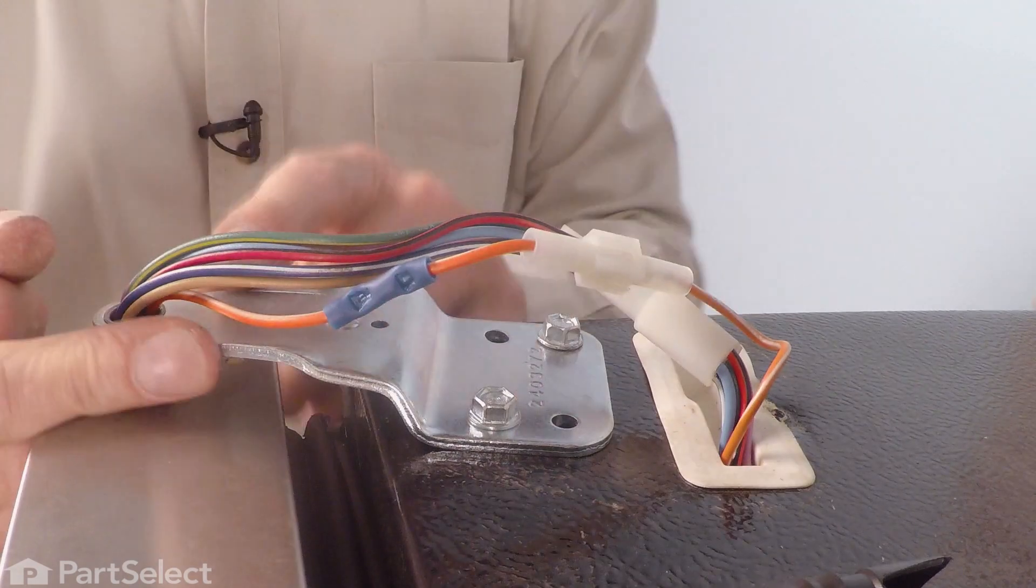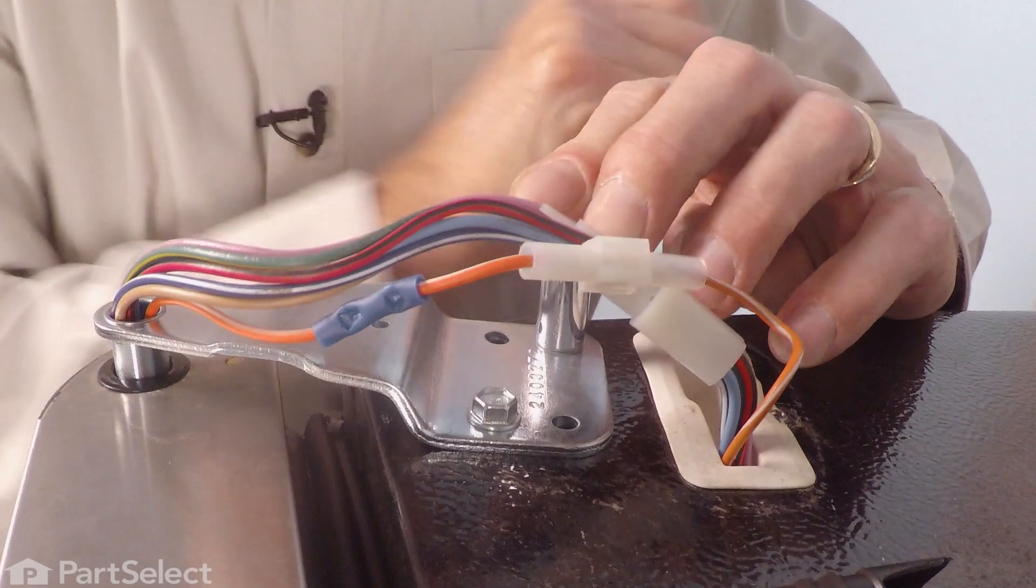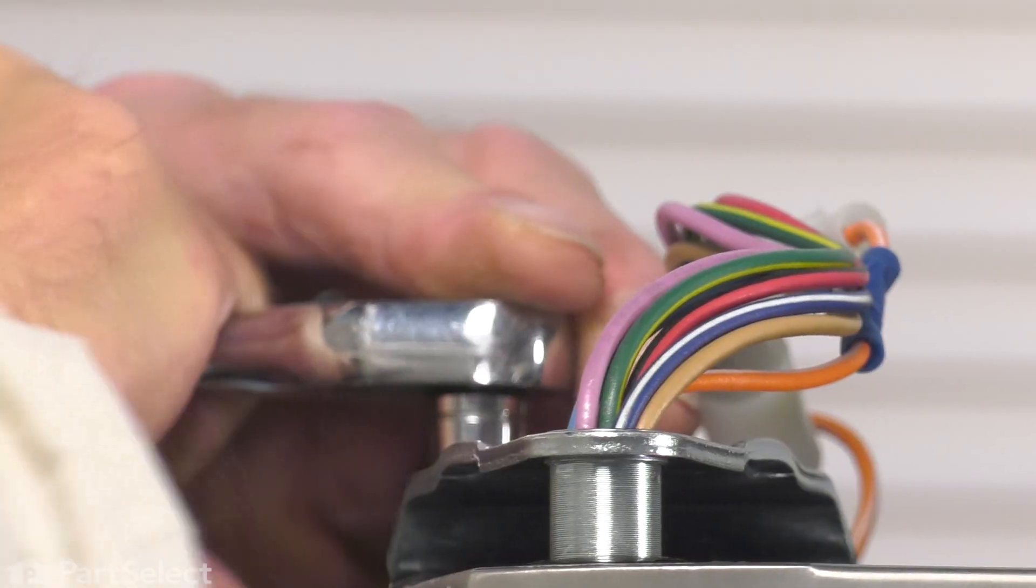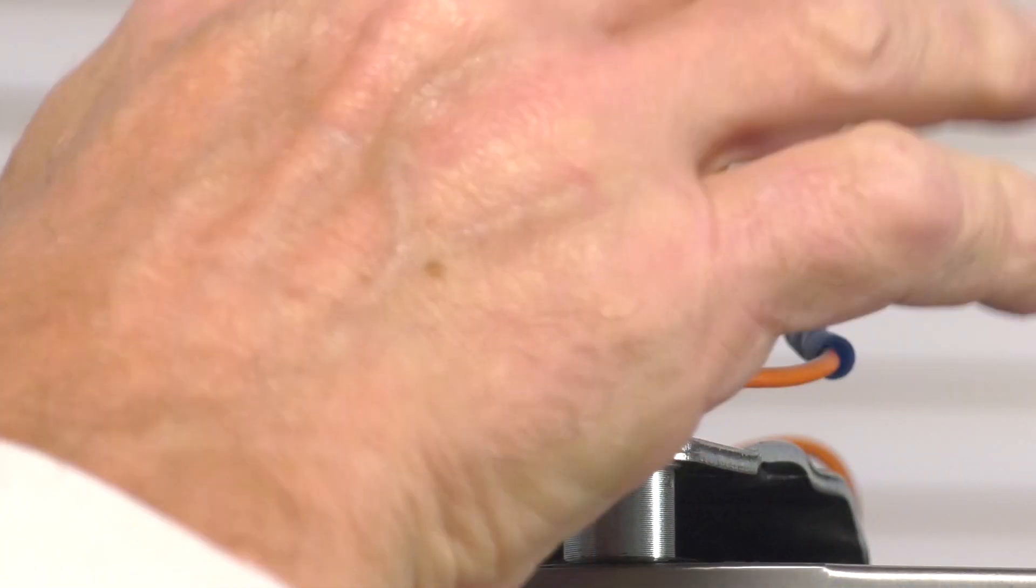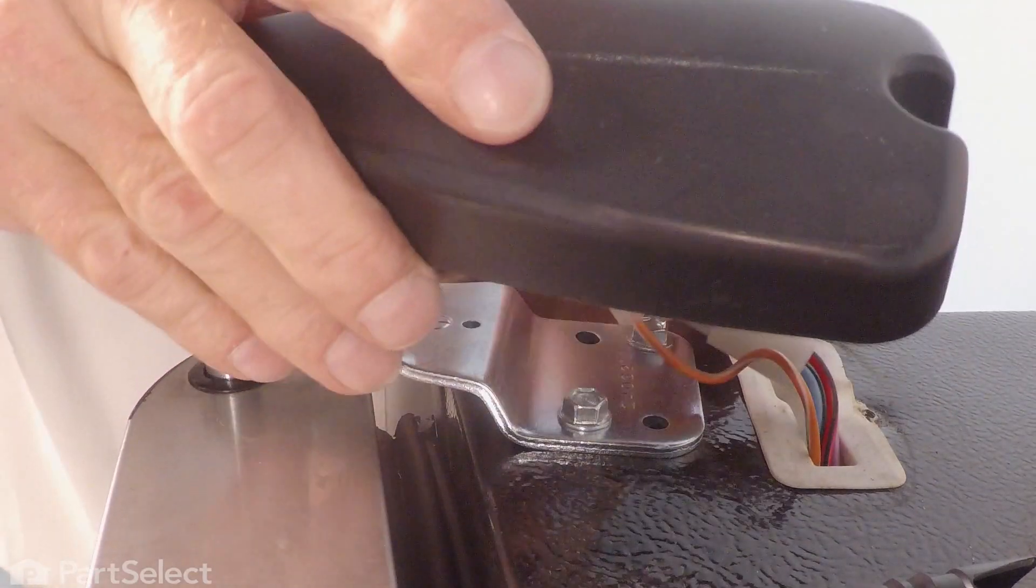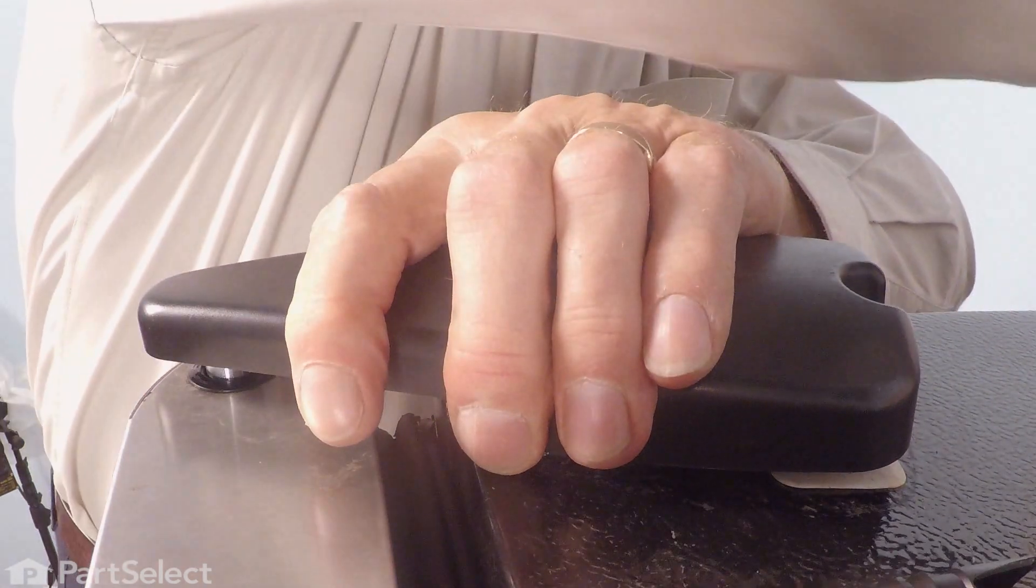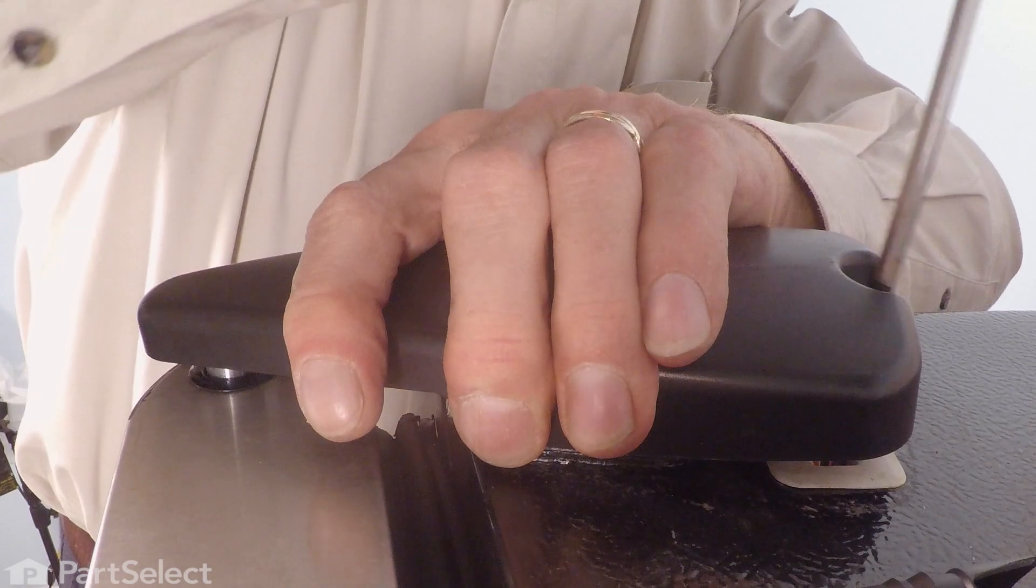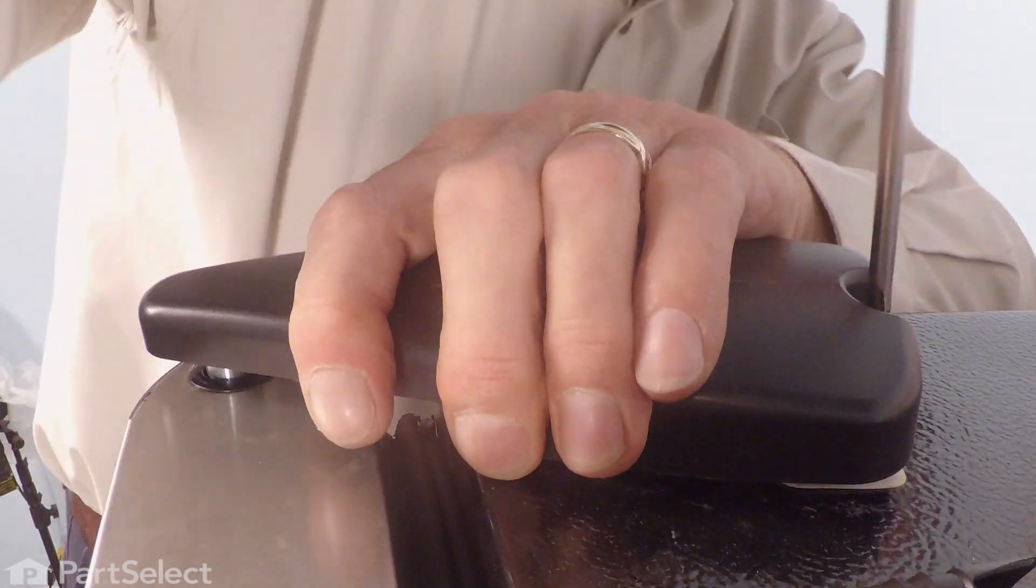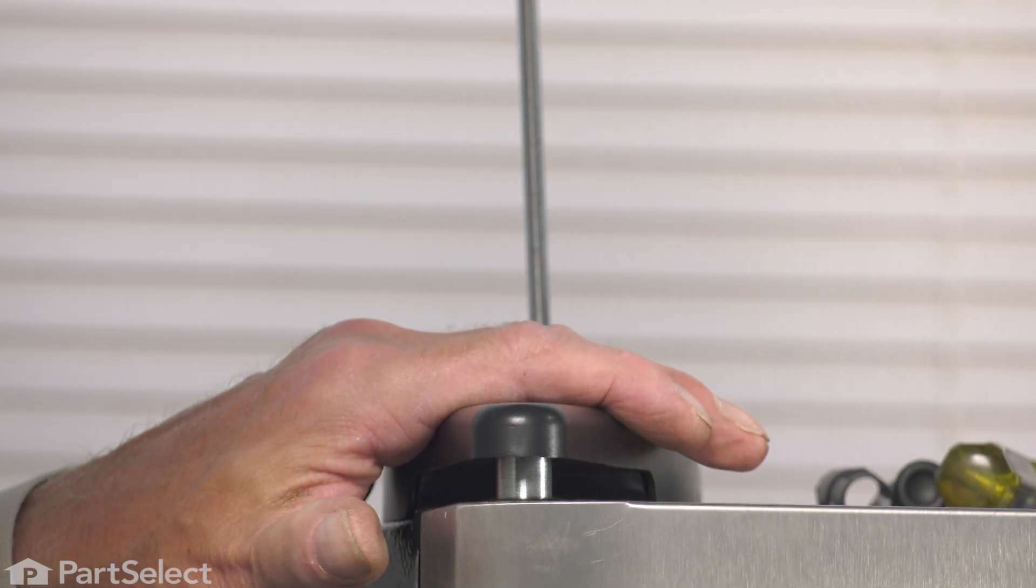If you need to adjust that door, you simply need to pivot that hinge to make sure we have that proper gap. Next, we'll put the hinge cover in place. We're now ready to reconnect the power and our repair is complete.